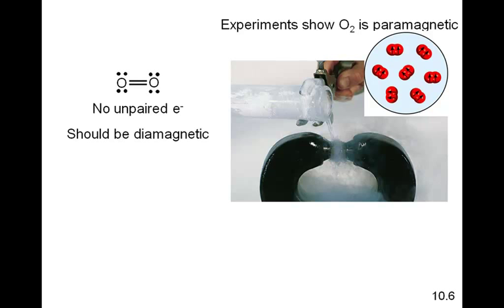To your right, what you see is a sample of liquid oxygen that is actually being poured between the two ends of a magnet. Experiments show that oxygen is paramagnetic. You recall that paramagnetism means that it is affected by a magnetic field — it's actually attracted by a magnetic field. The problem is, if you look at present bonding theory and particularly hybridization for the oxygen molecule, you would find that there are no unpaired electrons.